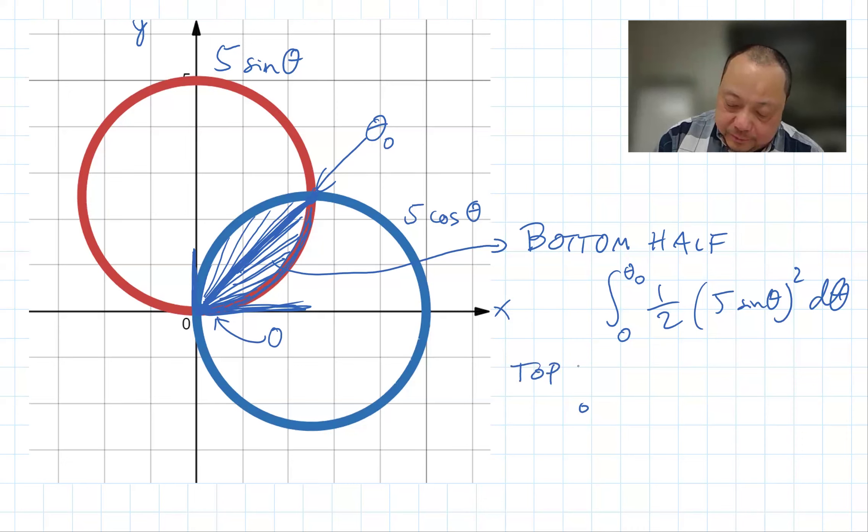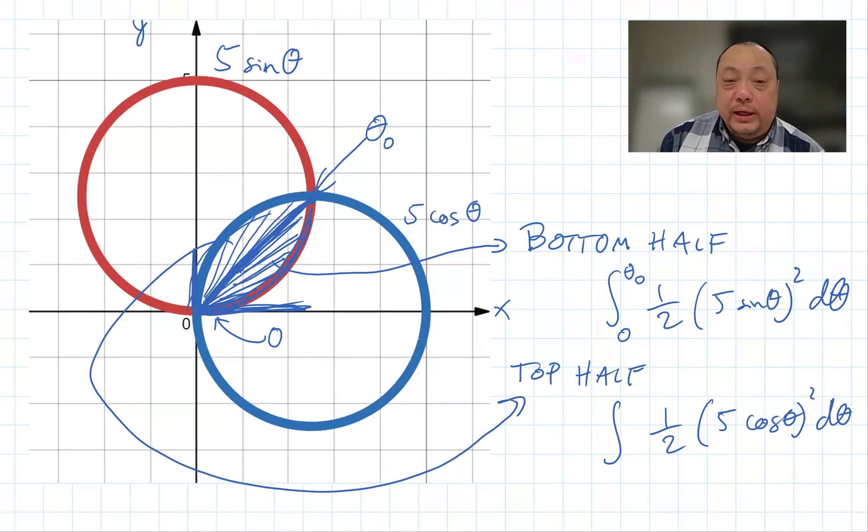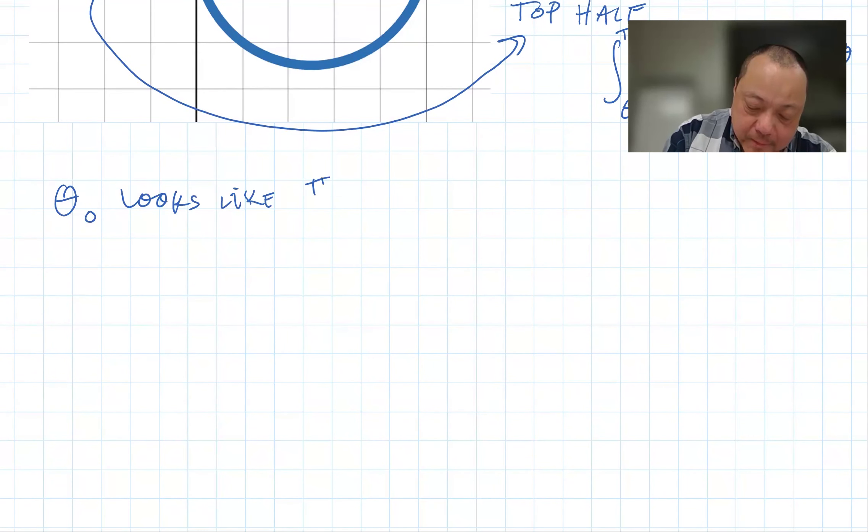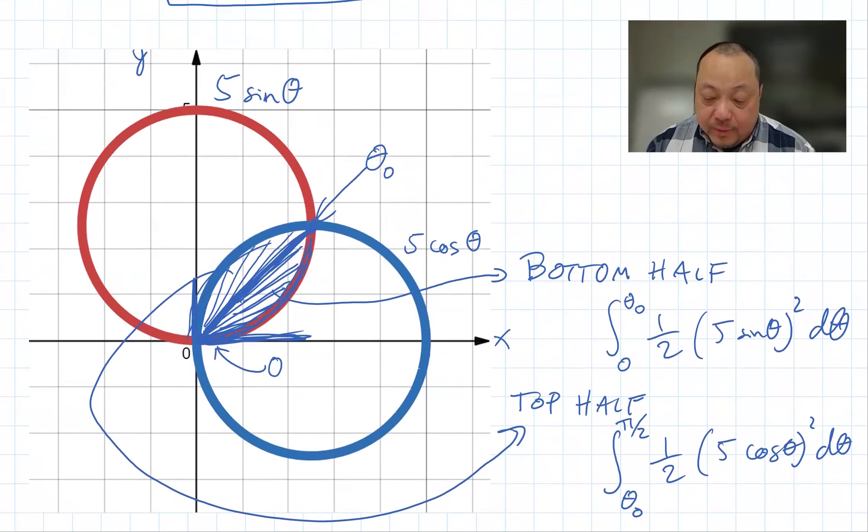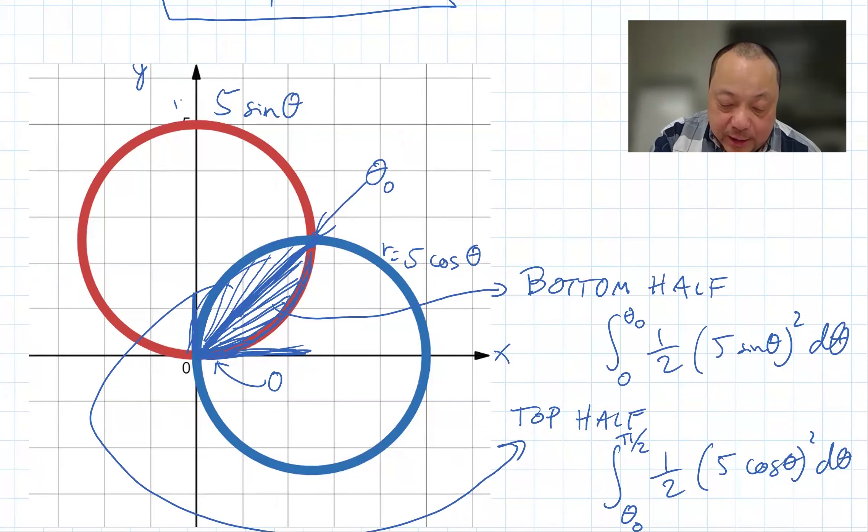And the top half is here. And it's actually going along the blue curve. It goes from theta naught to pi over two. So the question is where is theta naught. I think you can intuitively see that it's pi over four. But let's formally solve for it. We have two curves: r equals 5 cosine theta and r equals 5 sine theta. The intersection is where the r is equal at the same theta.